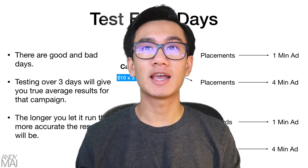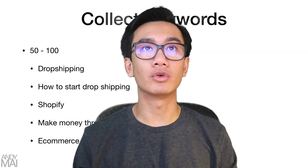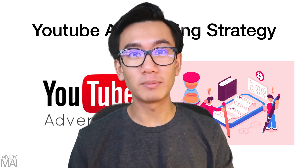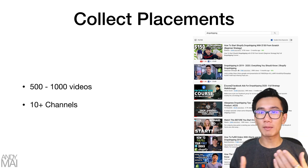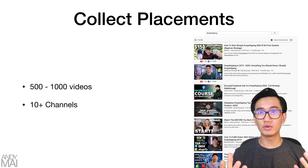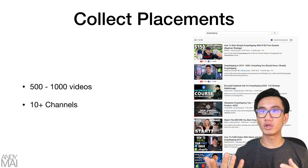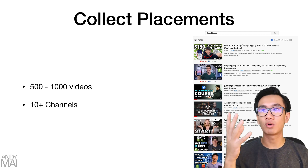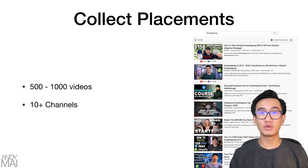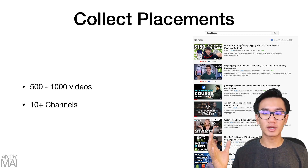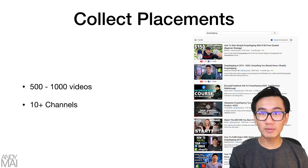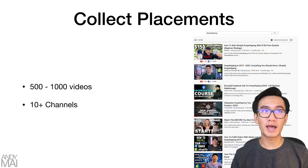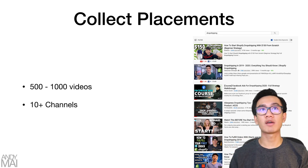Let's do a recap. First, collect placements — at least 500 to 1,000 videos. The reason you need so many is that a lot of these videos don't get that many views per day. Out of those views, roughly 50% have ad blockers, and of the remaining 50%, only about half will actually watch an ad. So you need a large pool of videos to actually get meaningful traffic.